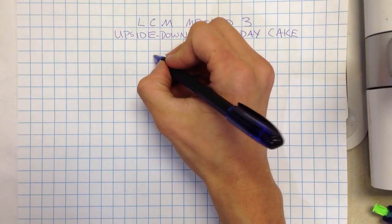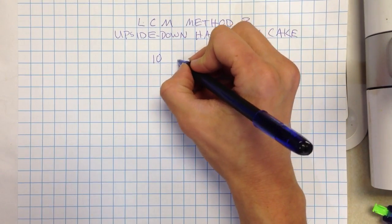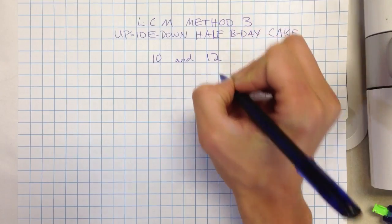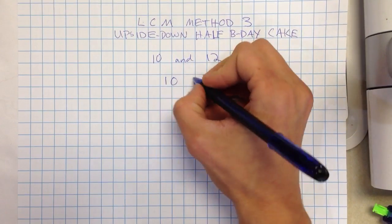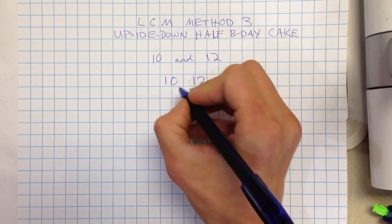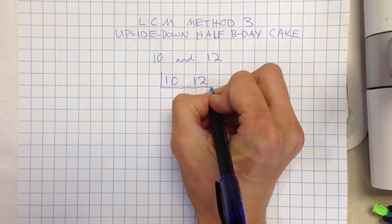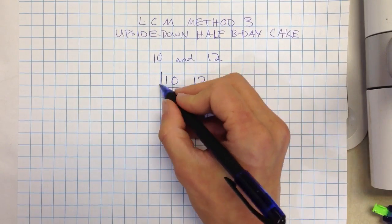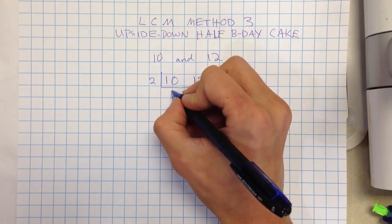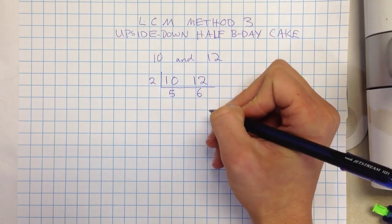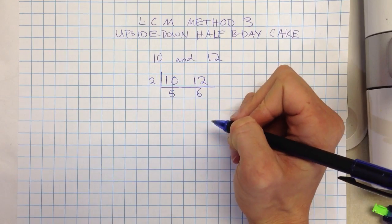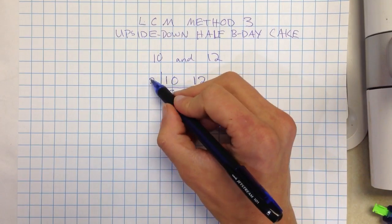So we started with 10 and 12. We're finding the LCM of those two numbers. I'm going to follow the same steps I used when I started half birthday cake for GCF. So I put a layer and then I think what can I factor out of both? I can factor 2. That leaves me with a 5 and over here a 6. Now can I factor anything else out? No. So my GCF was 2.